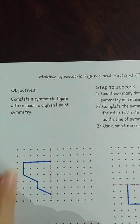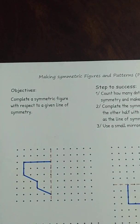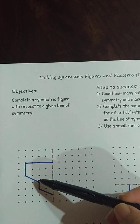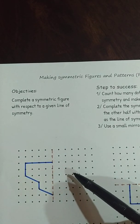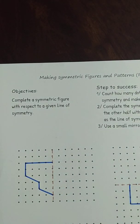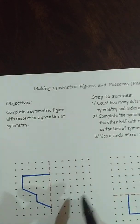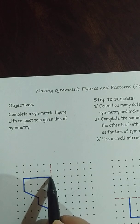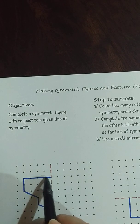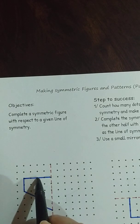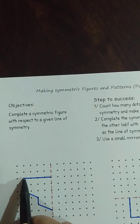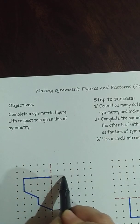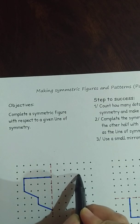Let's look at the first example. The first half is given on the left and we are going to draw the other half on the right. So you count how many dots from the line — this is one dot, two dots, three dots, four dots. So you count here: one dot, two dot, three dot, four dots. So you mark the point.